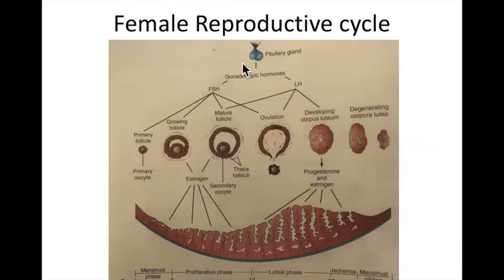During the proliferative phase, we have follicle stimulating hormone causing the follicle to mature within the ovary. Once that follicle matures to a certain point, it begins producing estrogen. That estrogen causes the wall of the endometrium to thicken and become more vascular.